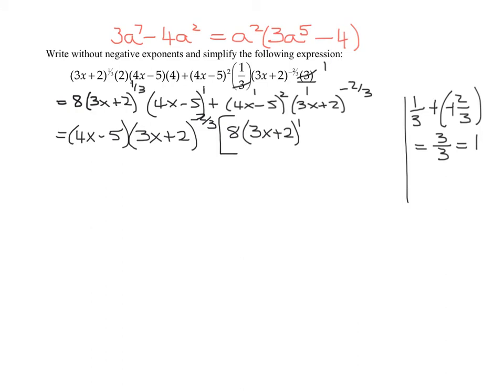If you're not sure if you've done it right, if I multiply this times this, you're going to add exponents. What's negative two thirds plus one? Negative two thirds plus three thirds is one third, which is what I started with. That's the hard part.